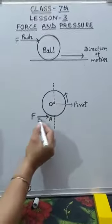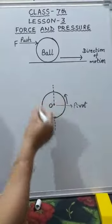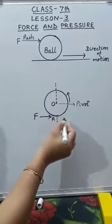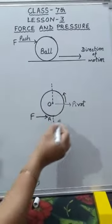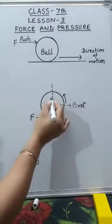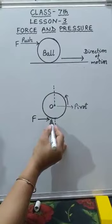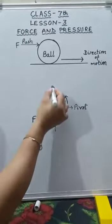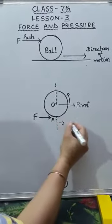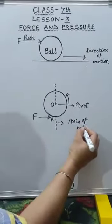If I apply force on this body, it cannot move forward because it is fixed at this point, so it will begin to turn about point O. The vertical axis passing through point O about which the body rotates is called the axis of rotation.